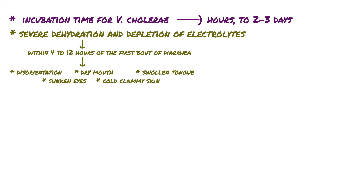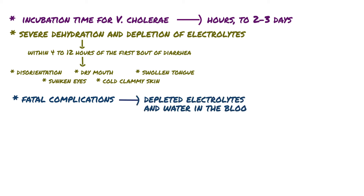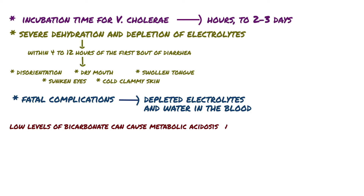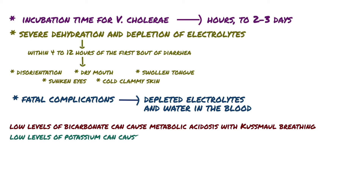Other even more severe, potentially fatal complications can come from depleted electrolytes and water in the blood. Low levels of bicarbonate can cause metabolic acidosis and deep and labored breathing, called Kussmaul breathing. Low levels of potassium can cause muscle dysfunction, including leg cramps and weakness.